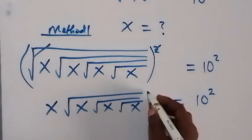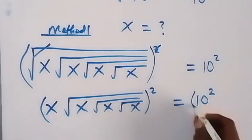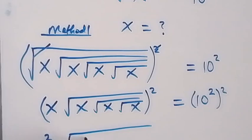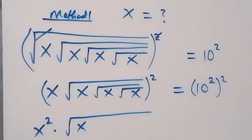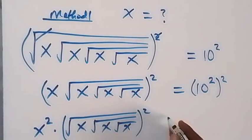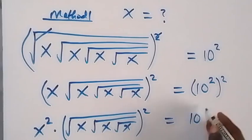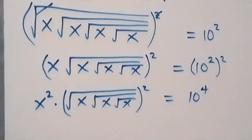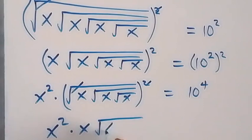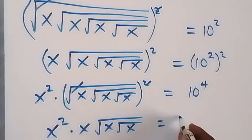Next step, we also square both sides again. The square affects x, so we have x squared, then times to affect this one too — square root of x, root x, then root x squared as well — which equals 10 raised to power 4. The square cancels the square roots, leaving square root of x, square root of x, square root of x, equals 10 raised to power 4.